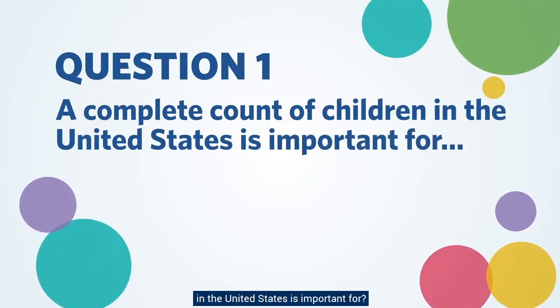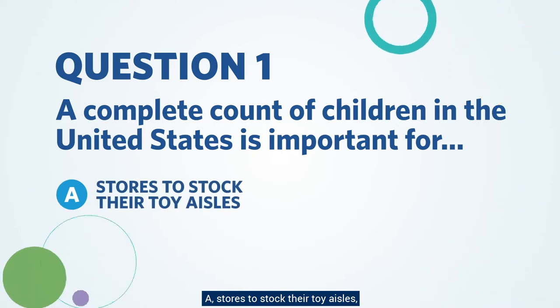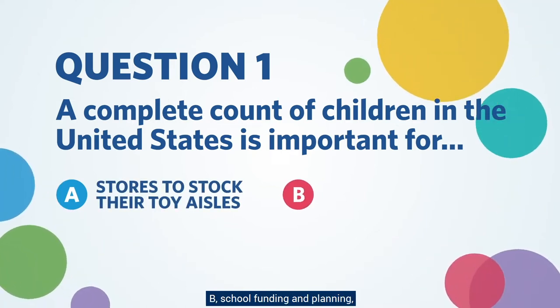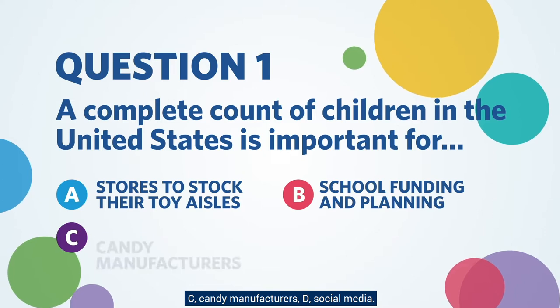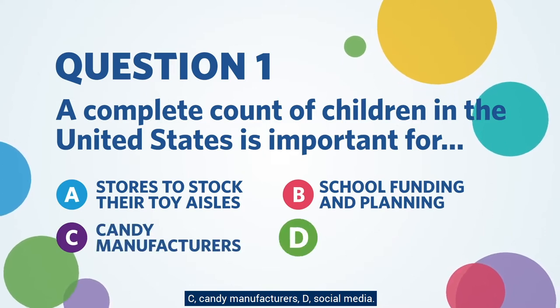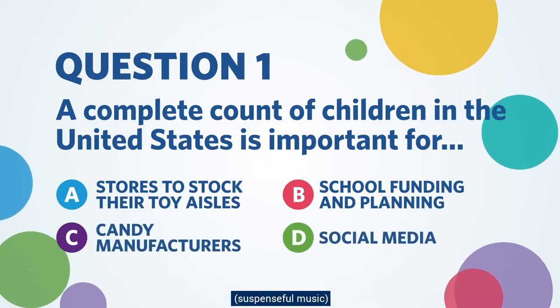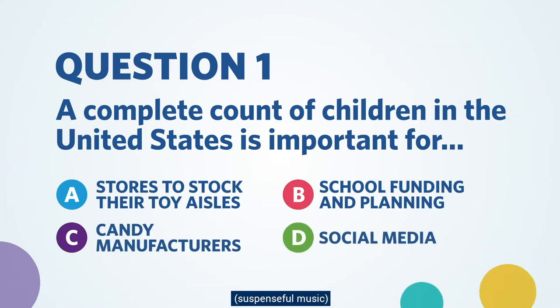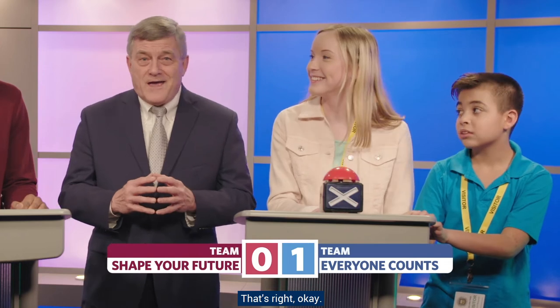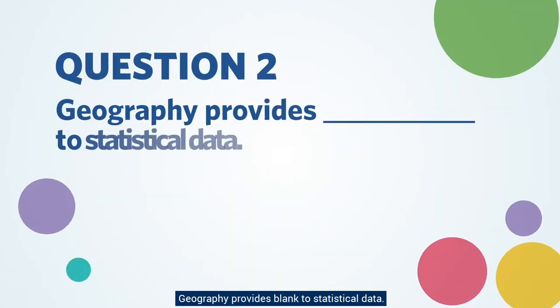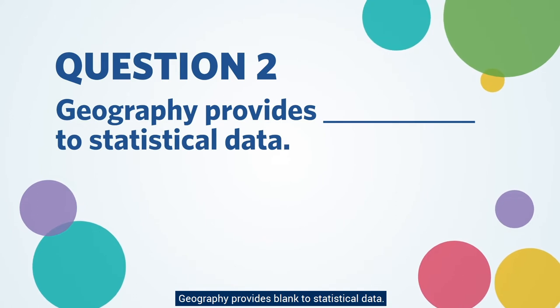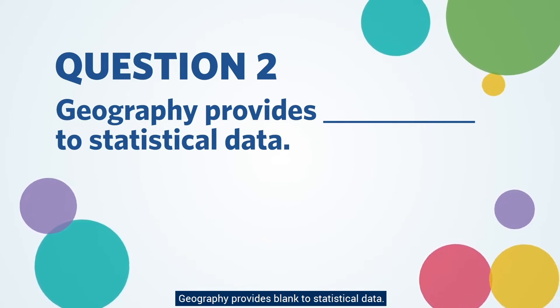First question: A complete count of children in the United States is important for — A) stores to stock their toy aisles, B) school funding and planning, C) candy manufacturers, or D) social media? The answer is B — school funding and planning. That's right!